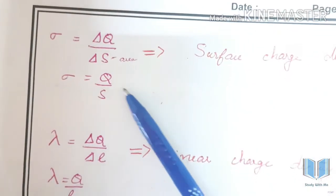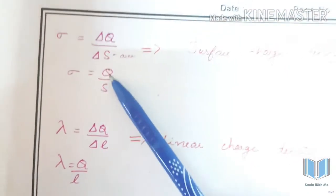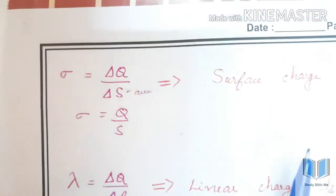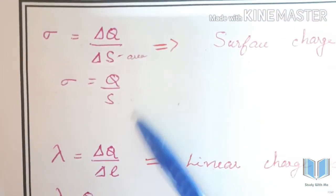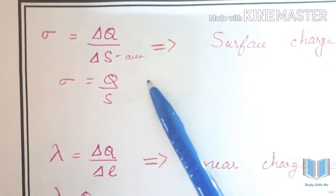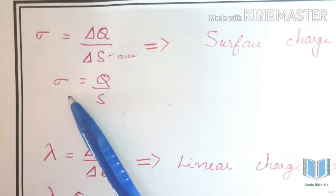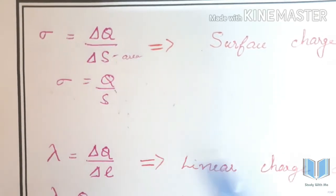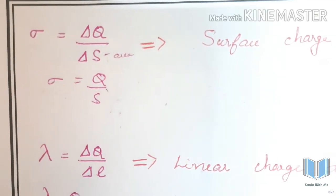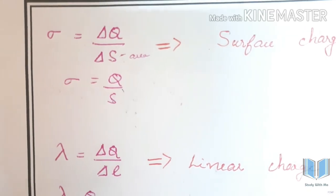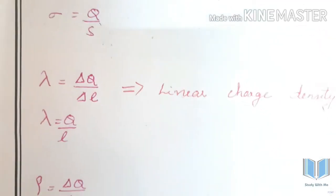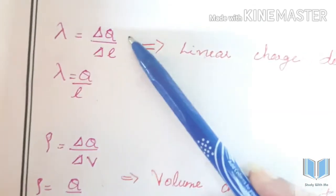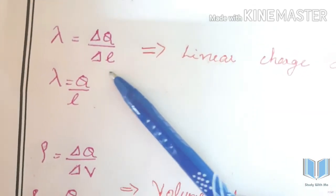Surface charge density: sigma is equal to delta q by delta s. For the complete surface, sigma equal to q by s — this is the total area. Linear charge density: lambda is equal to delta q by delta l, where l is the length of the line.